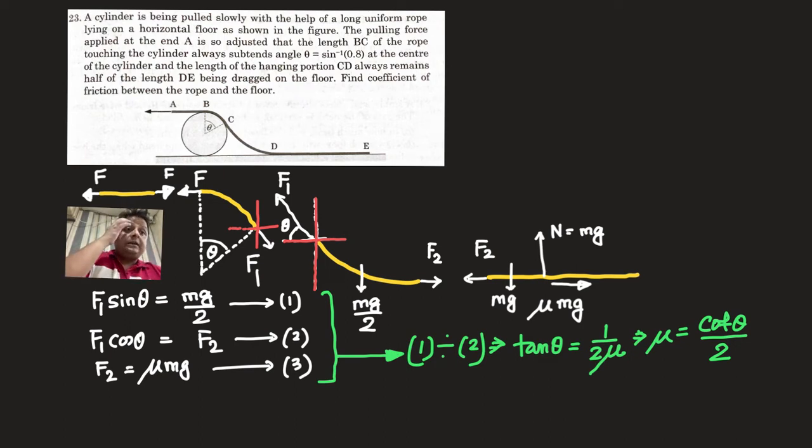You can read this problem that a cylinder has been pulled slowly with the help of long uniform rope lying on horizontal floor as shown. Pulling force applied at end A is adjusted so that length BC of the rope touching the cylinder always subtends angle theta at the center of the cylinder, and length of the hanging portion CD always remains half of the length DE.